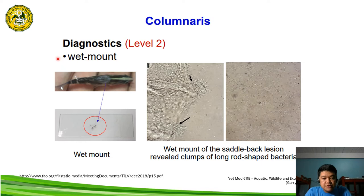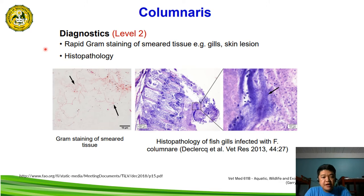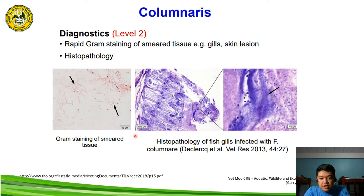Diagnostics include wet mounts — a wet mount of the saddleback lesion revealed clumps of long, rod-shaped bacteria, which are the causative agent of columnaris. Another level 2 diagnostic is rapid gram staining of smeared tissue, using gills and skin lesions as specimens. There is also histopathology — this is a gram staining of smeared tissue from tilapia infected with columnaris, and a histopathology diagram of the gills of fish infected with Flavobacterium columnare.